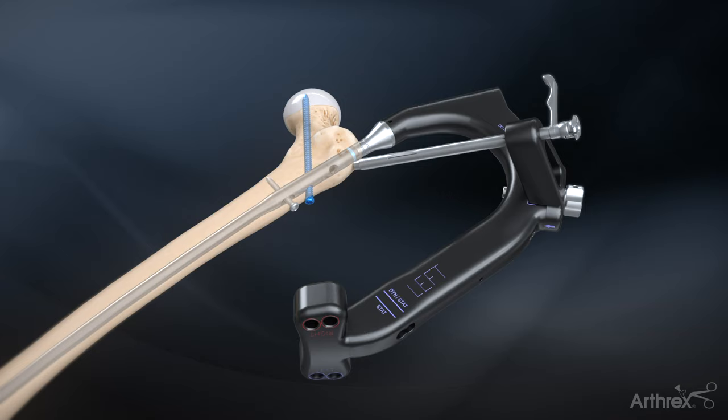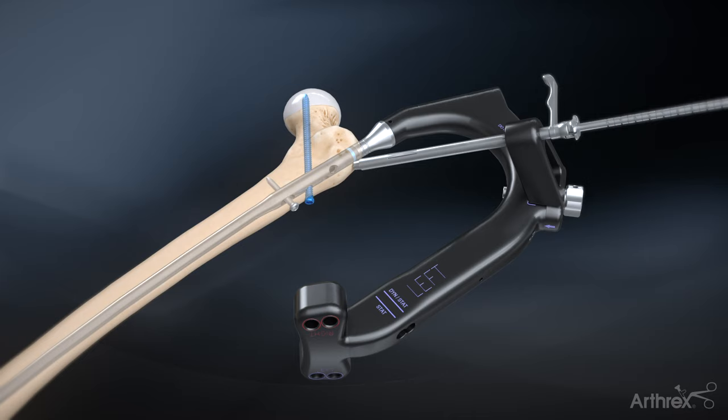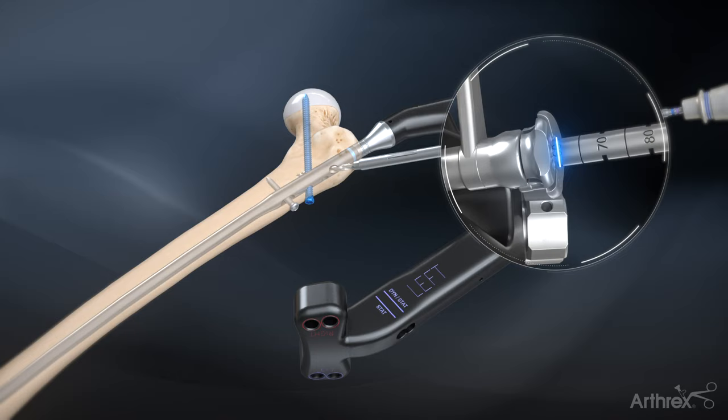Slide the screw sheath, 5.5 mm drill and obturator assembly through the proximal hole in the targeting guide. Drill to the appropriate depth using the calibration marks on the drill.